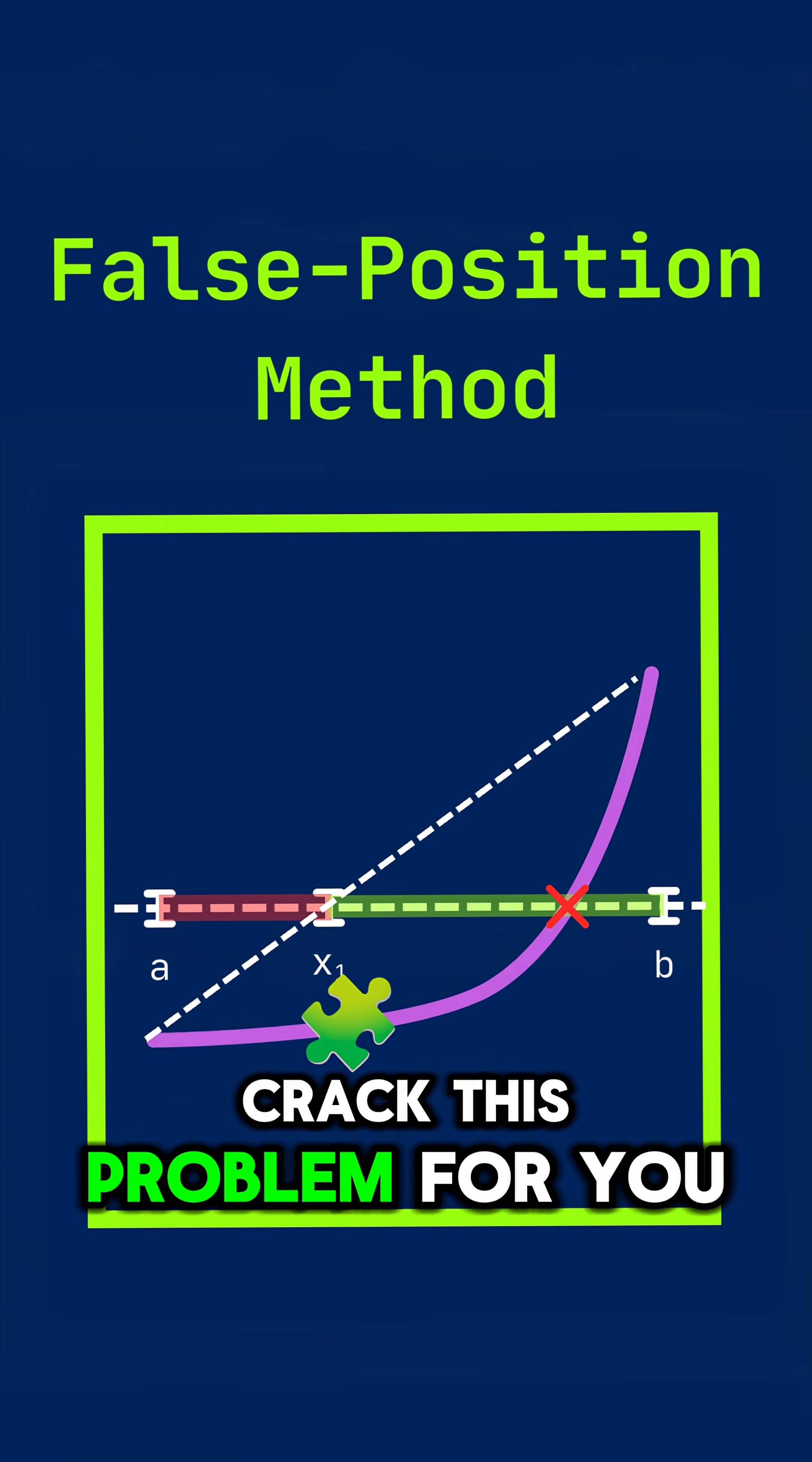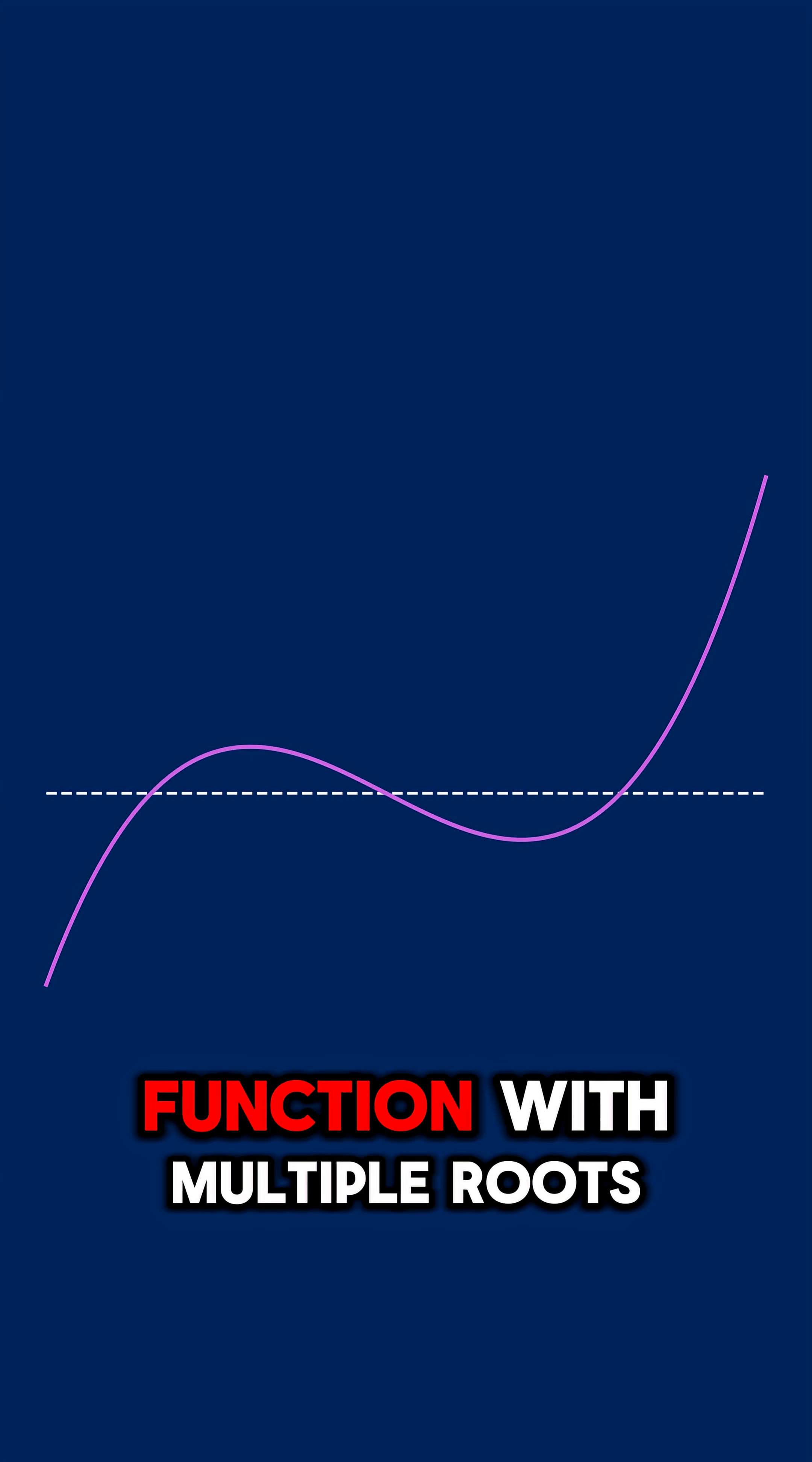Let's see how the false position method can crack this problem for you. We have a continuous function with multiple roots.